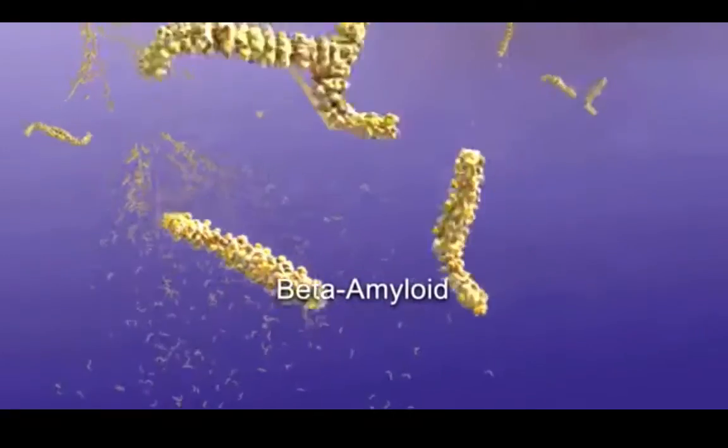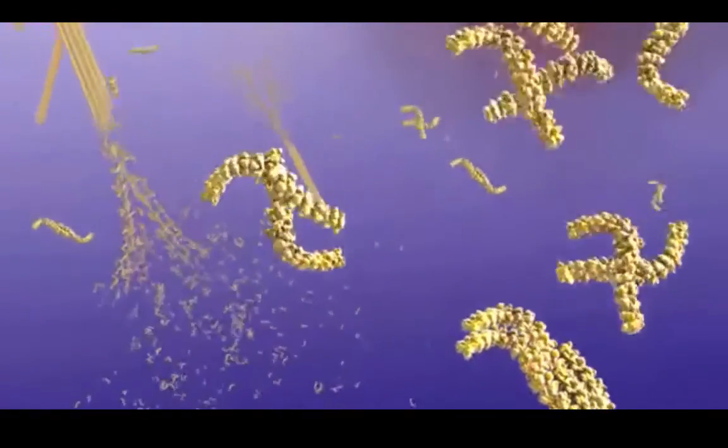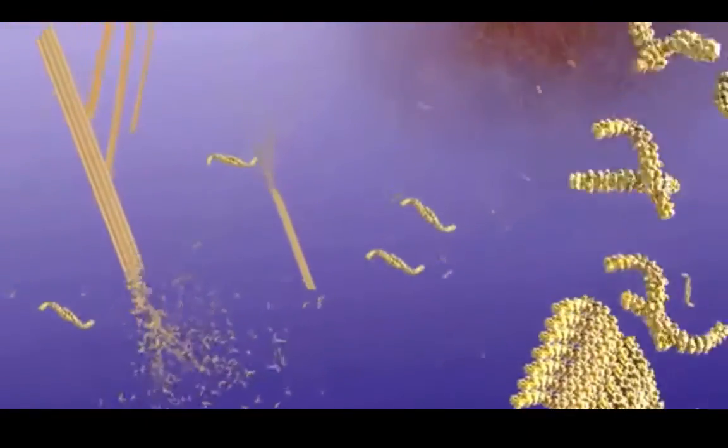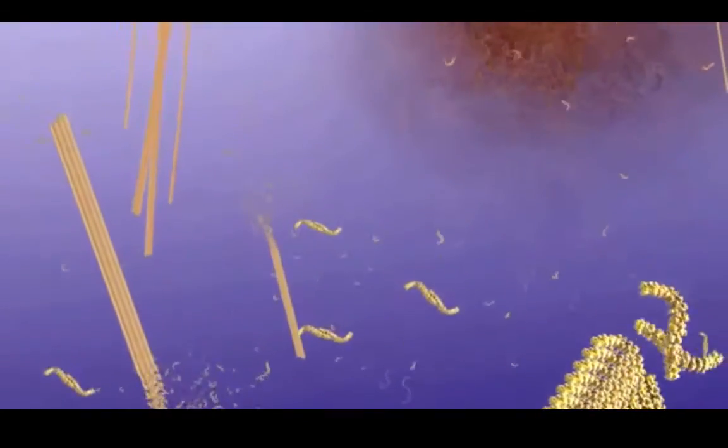As we said before, beta secretase plays a major role in the formation of amyloid beta, which aggregates to form plaques in the brain. Because of its critical role in this process, it has become a huge target for the efforts of Alzheimer's drug development.